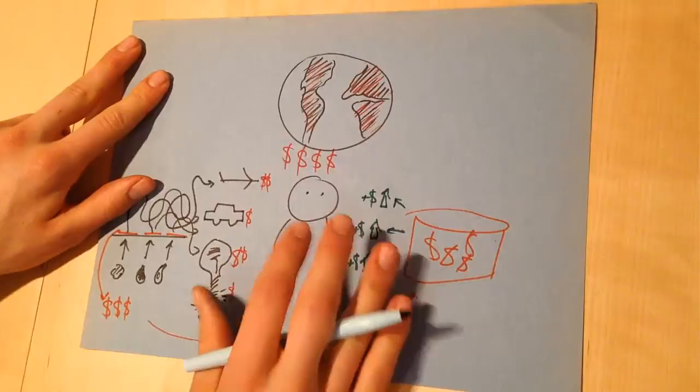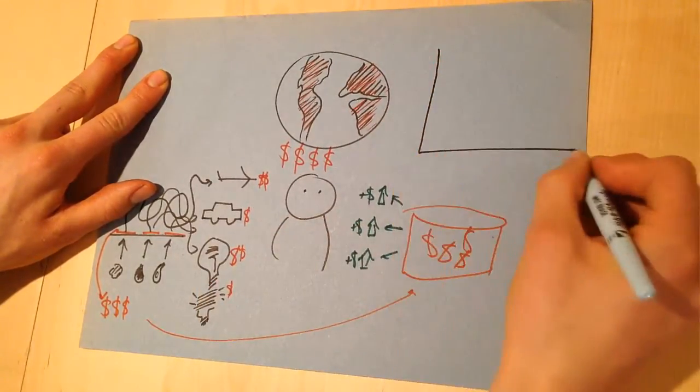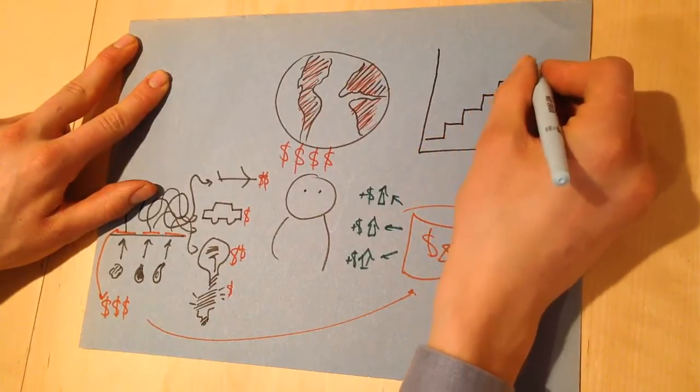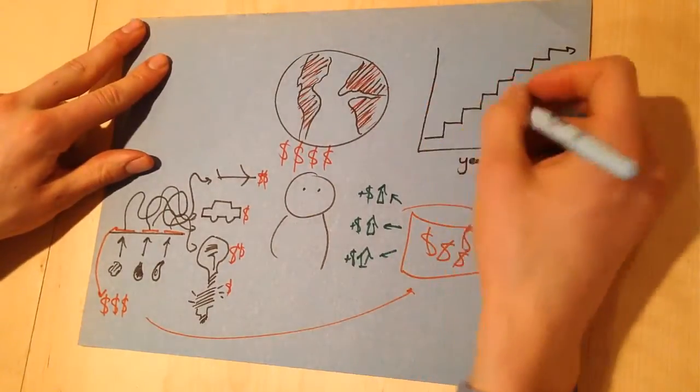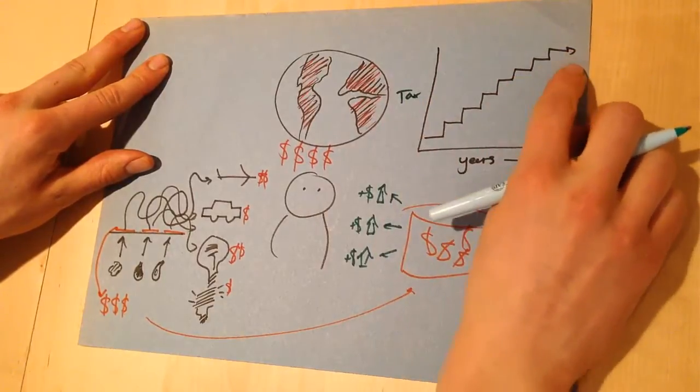One other important part about this is, how does it protect American businesses? So, one thing that businesses love is predictability. Uncertainty costs money, and a revenue neutral carbon tax is exactly that. It shows exactly how much the tax will be year to year, and businesses can predict it.